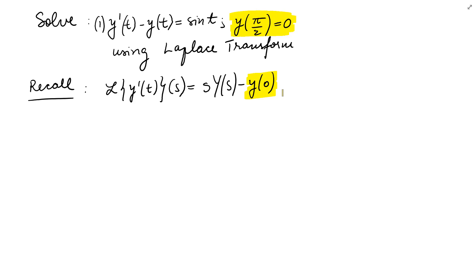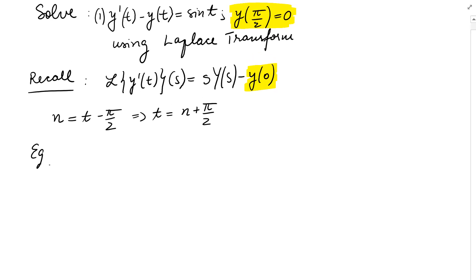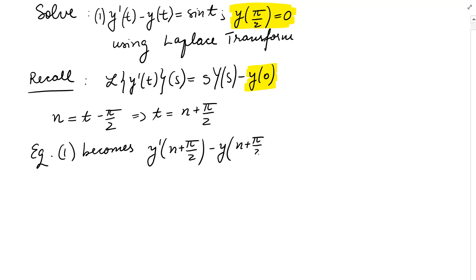We will have to shift our variable pi over 2 units to the left. To do that, we make the substitution n equals t minus pi over 2, which means t equals n plus pi over 2. So equation 1 becomes: y prime of (n plus pi over 2) minus y of (n plus pi over 2) equals sin of (n plus pi over 2).